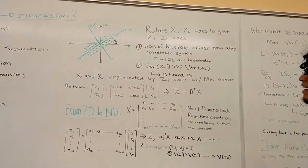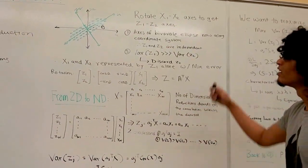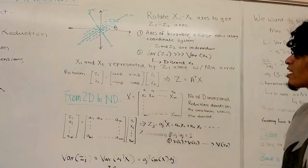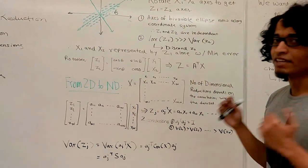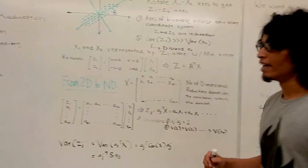We also notice that the variability of z1 is much higher than the variability of z2. In a way, z2 is quite redundant. We can actually just discard z2 and represent x1 and x2 by z1 alone with the minimum possible error.